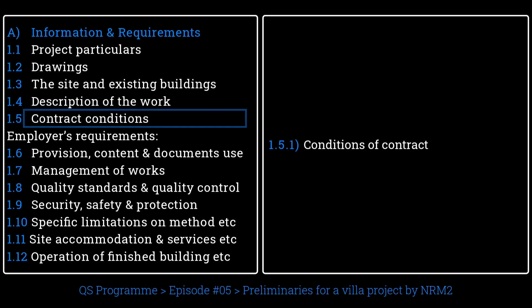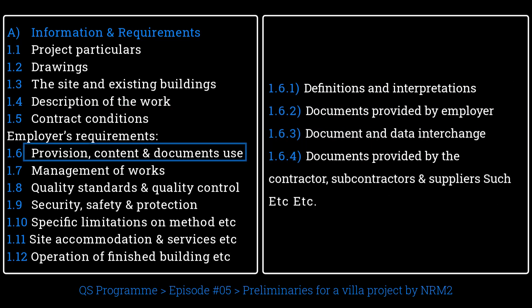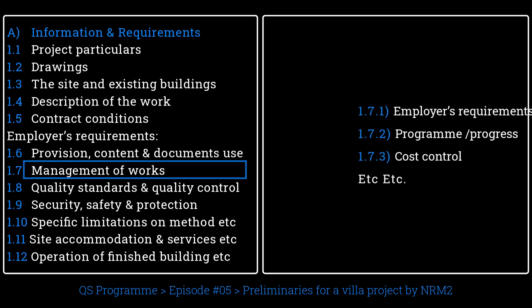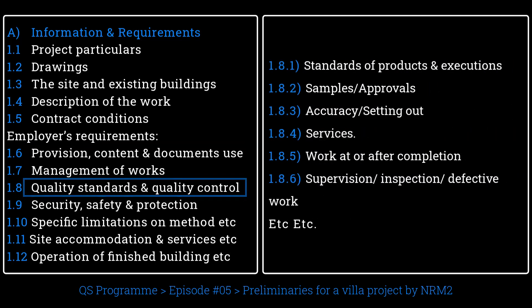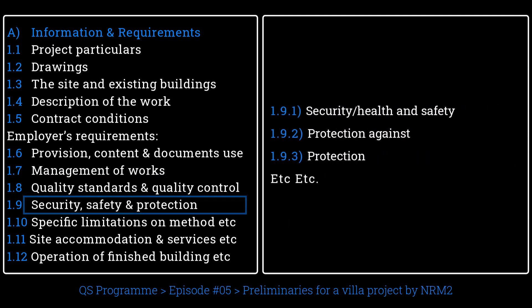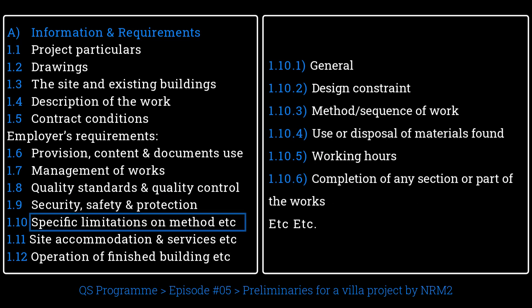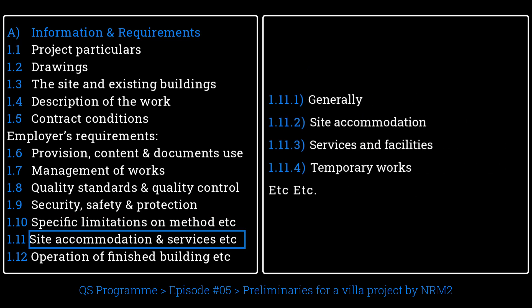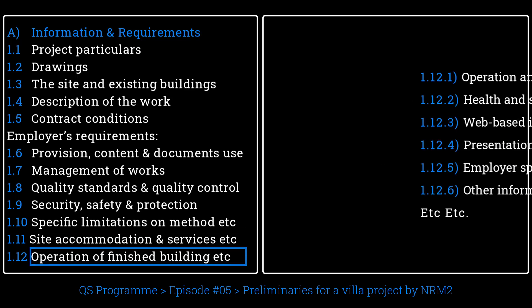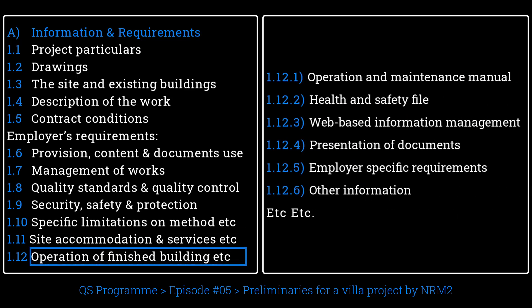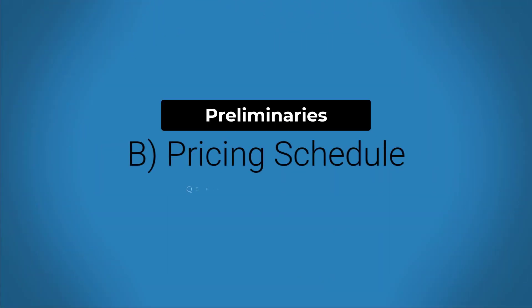The form of contract title needs to be defined, such as JCT, NEC, and GCT, etc. Employer's requirements cover provision, content and use of documents, management of work, quality standards and quality control, security, safety and protection, and specific limitations on method, sequence, and timing. Site accommodation, services, facilities, and temporary works are also included, as well as operation, maintenance, and the finished building.